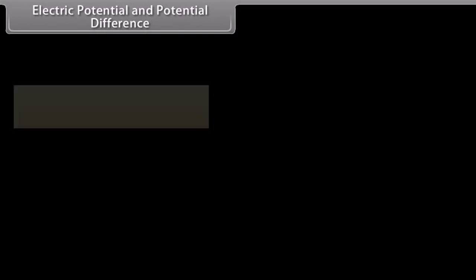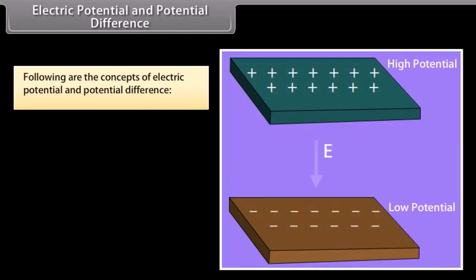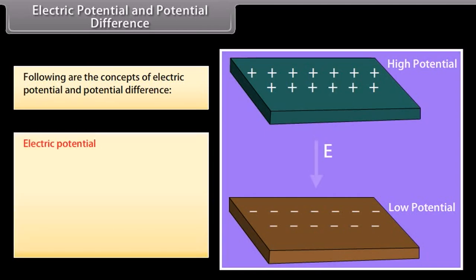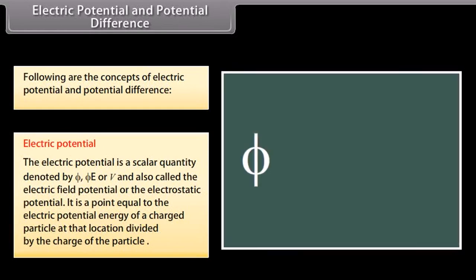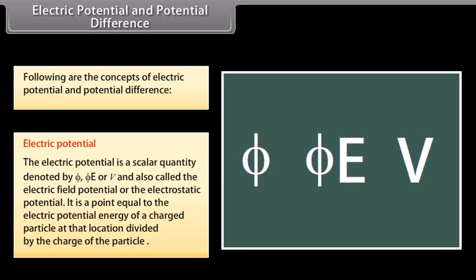Let us look at the concepts of electric potential and potential difference. Electric potential is a scalar quantity denoted by E or V. It is defined as the electric potential energy of a charged particle at a location divided by the charge of the particle.